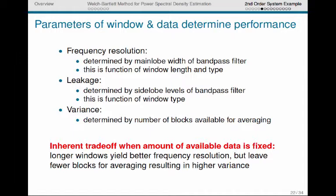The variance is determined by the number of blocks that we have available for averaging. There is this inherent trade-off when we have just a fixed amount of data. We can use longer windows, which are going to give us better frequency resolution, but they will leave fewer blocks for averaging, which will result in higher variance. Conversely, we can use shorter windows, which will yield worse frequency resolution, but it will give us a lot more blocks to average over, resulting in a lowered variance. So we have this trade-off that we have to live with when we're doing the Welch-Bartlett approach.